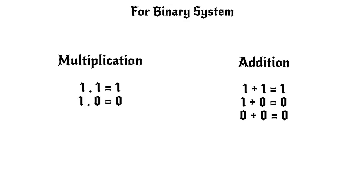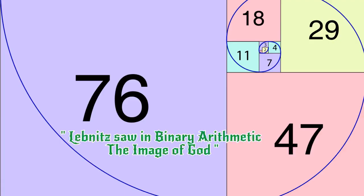For a binary system the properties of addition and multiplication are as follows. Laplace once quoted Leibniz saw in binary arithmetic the image of creation. He imagined that unity represents God and zero the void.